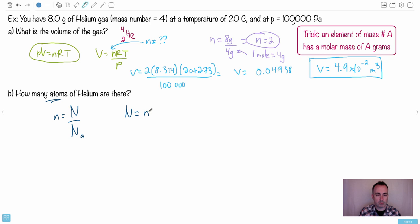In this case, I want to solve for N. That's the number of atoms. Remember that from before? N is the number of atoms. Because of that, I just get N equals little n, the number of moles, times Avogadro's number. So the number of moles, remember, we found was 2, and I get Avogadro's number was 6.02 times 10 to the 23.